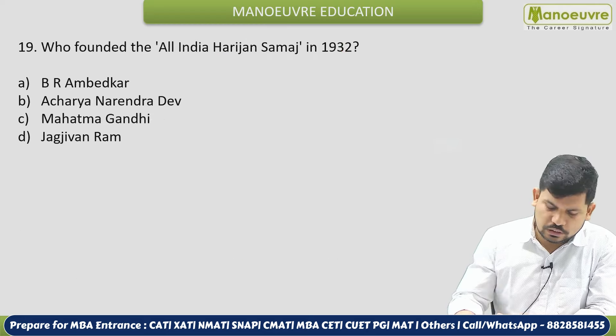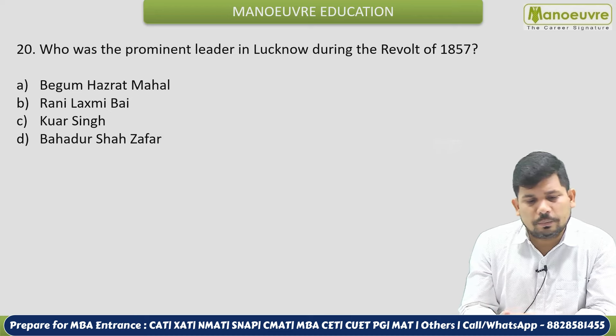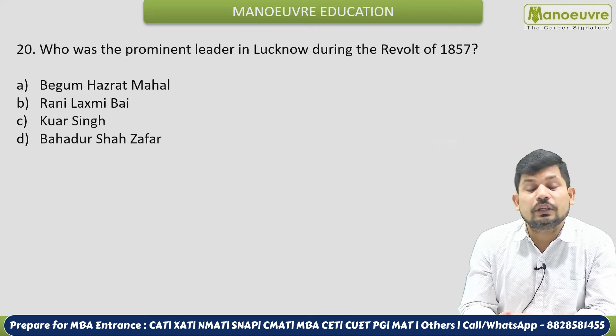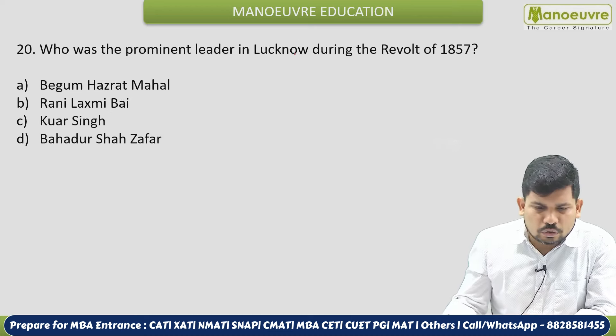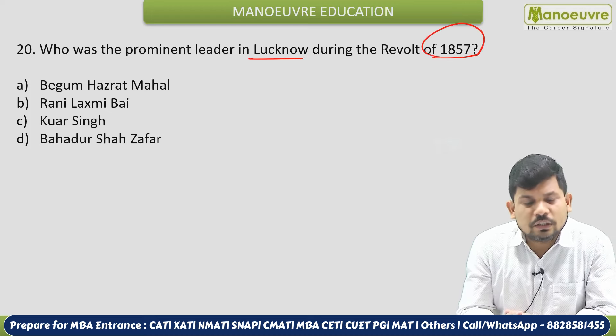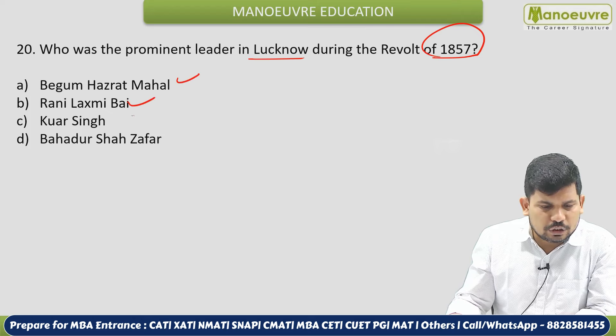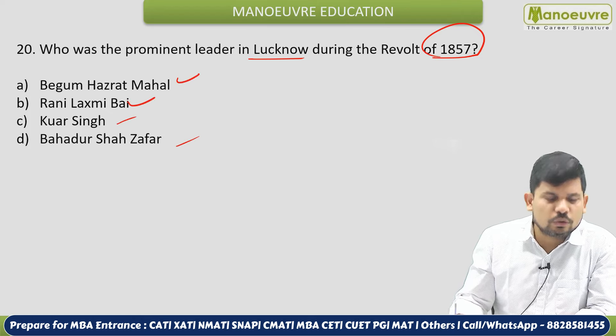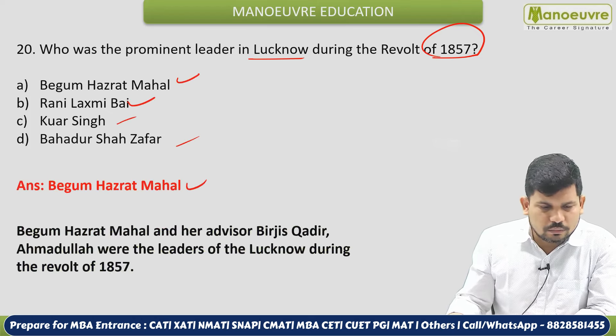Next: Who founded the All India Harijan Samaj in 1932? Related to social reform — the correct answer is Mahatma Gandhi. Next: Who was the prominent leader in Lucknow during the Revolt of 1857? The answer is Begam Hazrat Mahal. Other 1857 leaders include Rani Lakshmibai, Kunwar Singh from Bihar, and Bahadur Shah Zafar from Delhi — all belonging to the 1857 revolt but leading from different places.